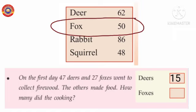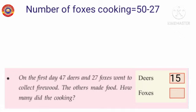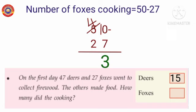Then total number of foxes equals 50. Number of foxes went for collecting firewood equals 27. Number of foxes cooking equals 50 minus 27. Here in the ones place, 0 and 7 are there. We can't subtract 7 from 0, so you take 1 from 5. 5 becomes 4, 0 becomes 10.